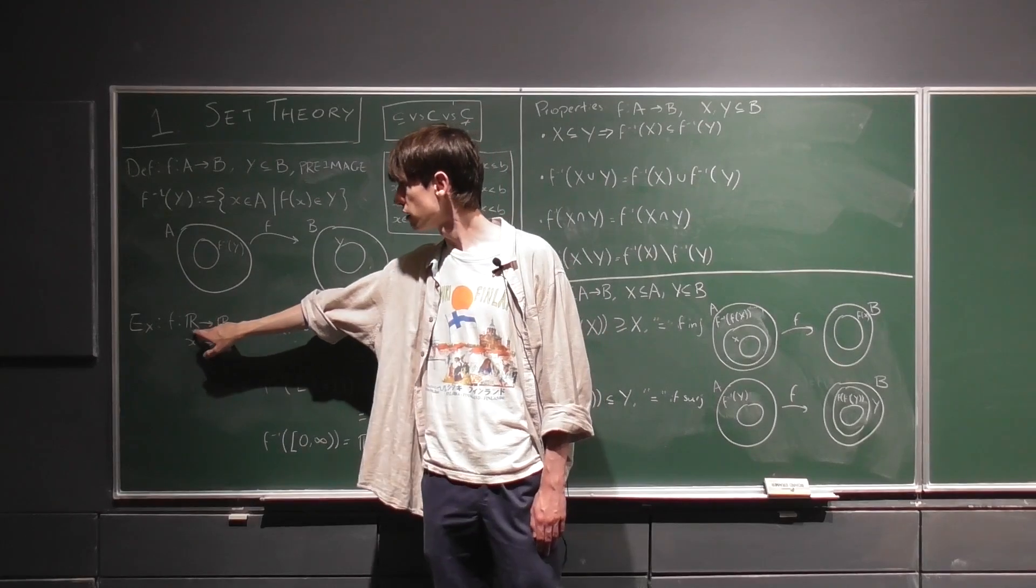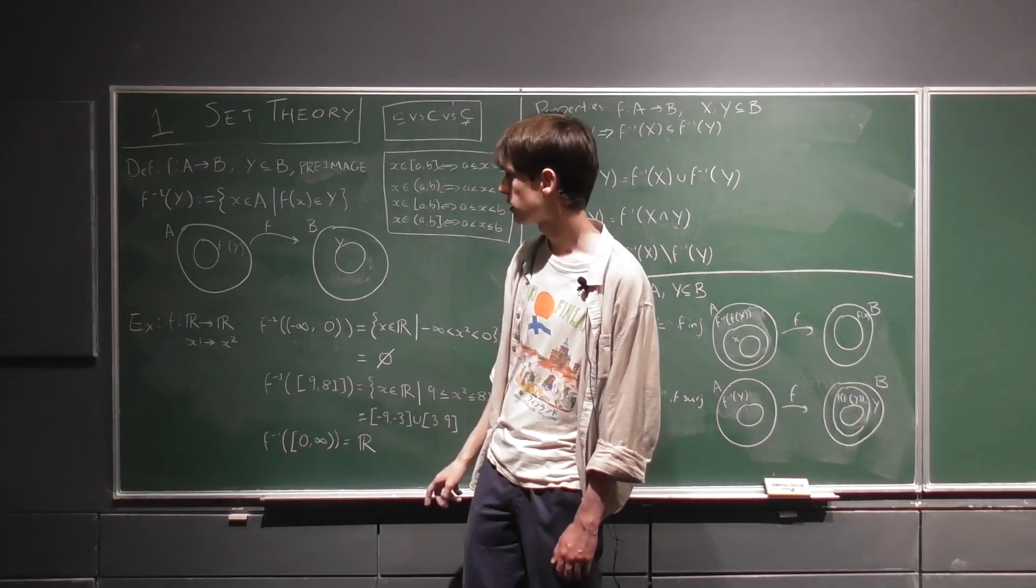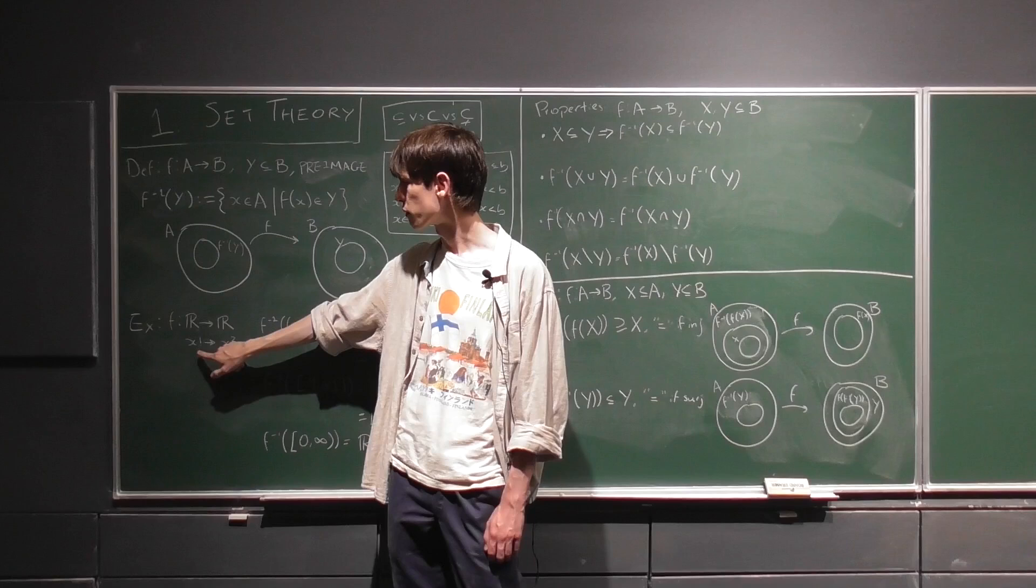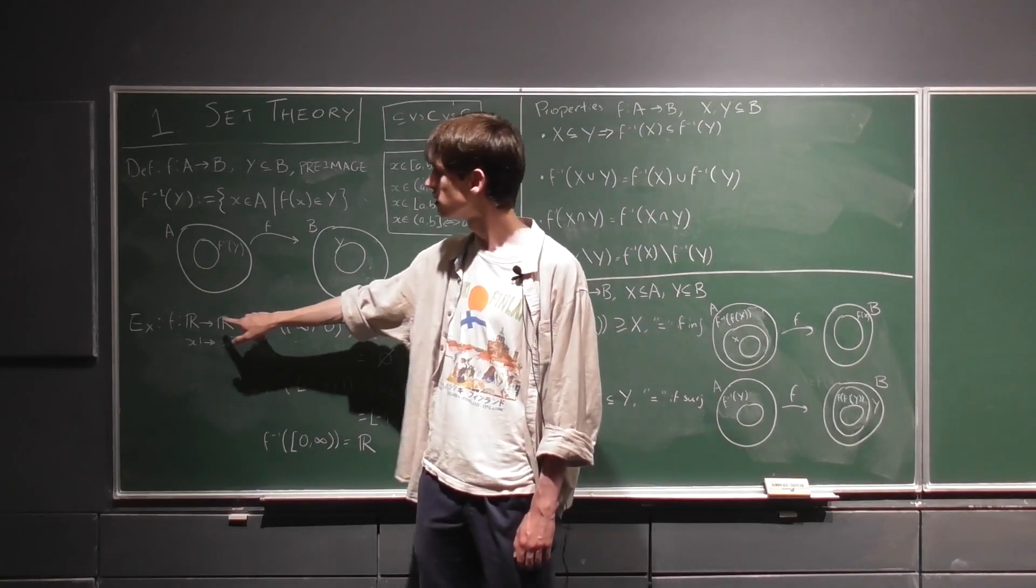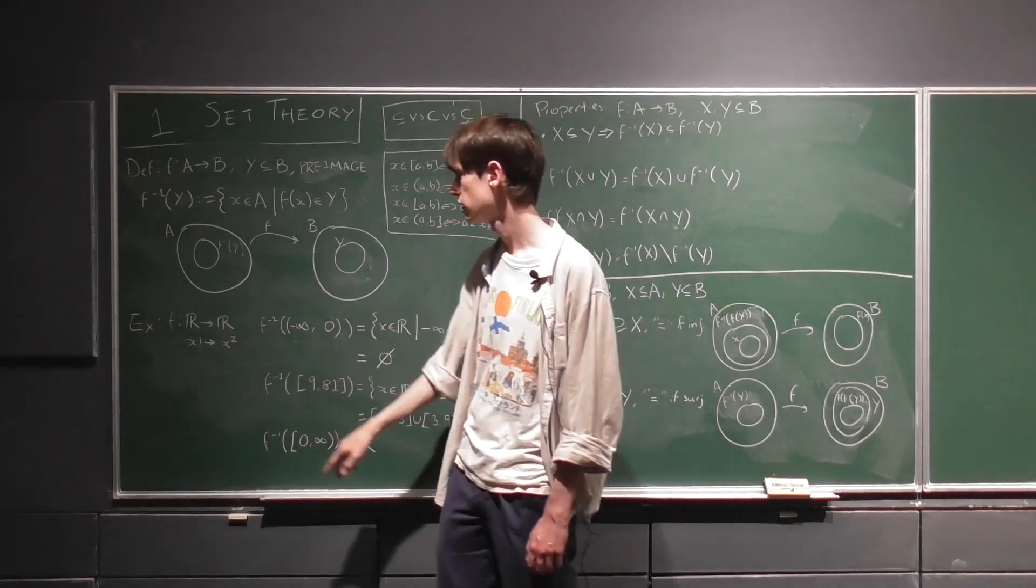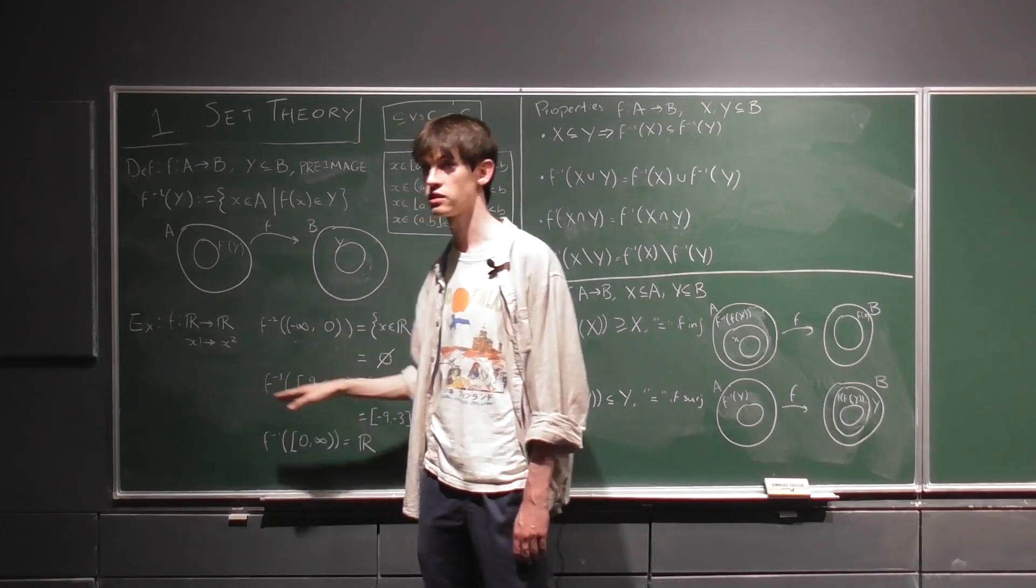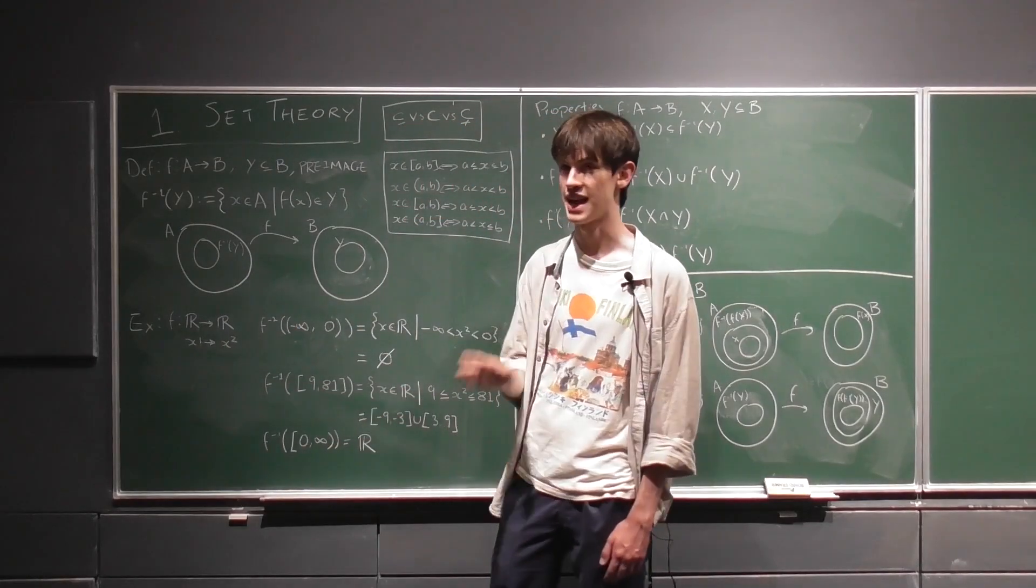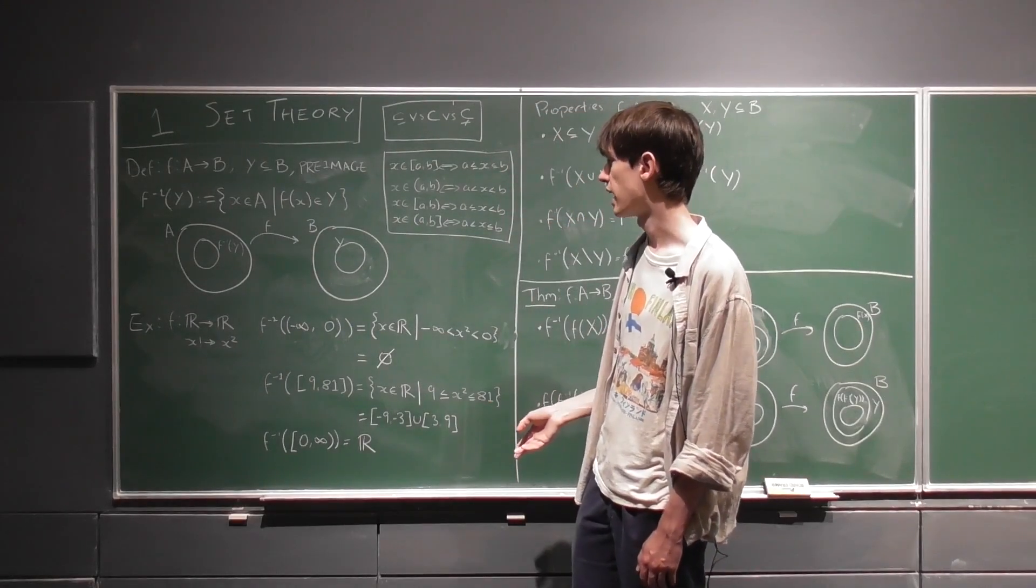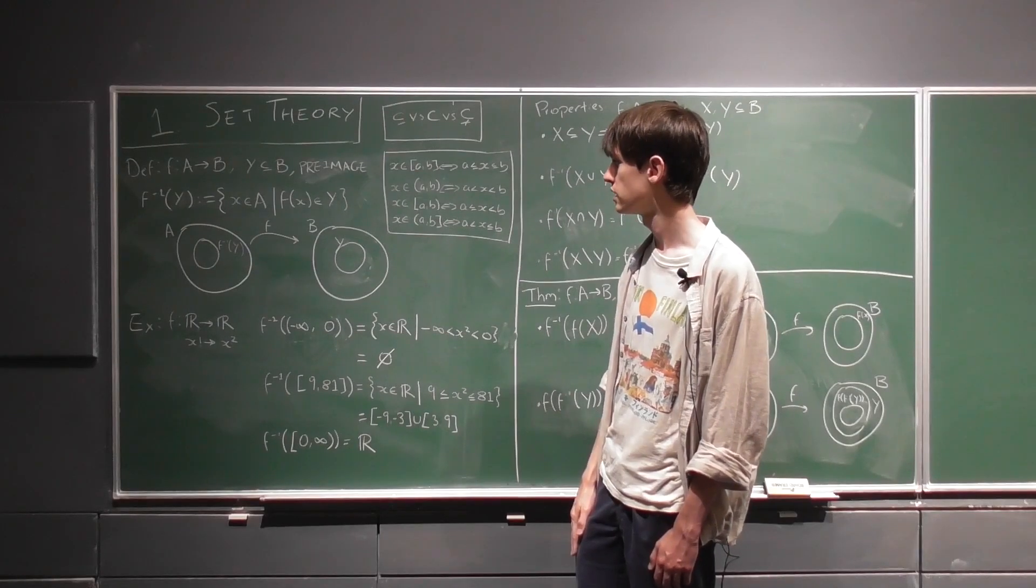An example here on the real line, where f maps R to R, where this simply just denotes the real numbers. Now here you'll see we're using this arrow without a base, and here it's an arrow with a base. All this means is no base, it means set to set, and the base means what happens to the elements of those sets. So here f just is mapping x to x squared. So you might see this normally written as f of x equals x squared.